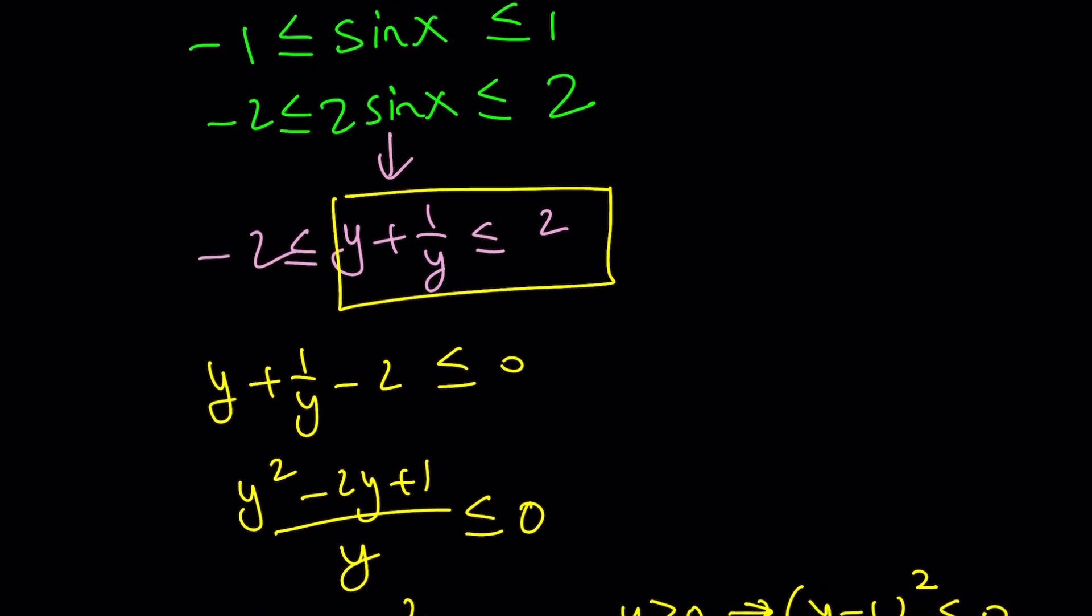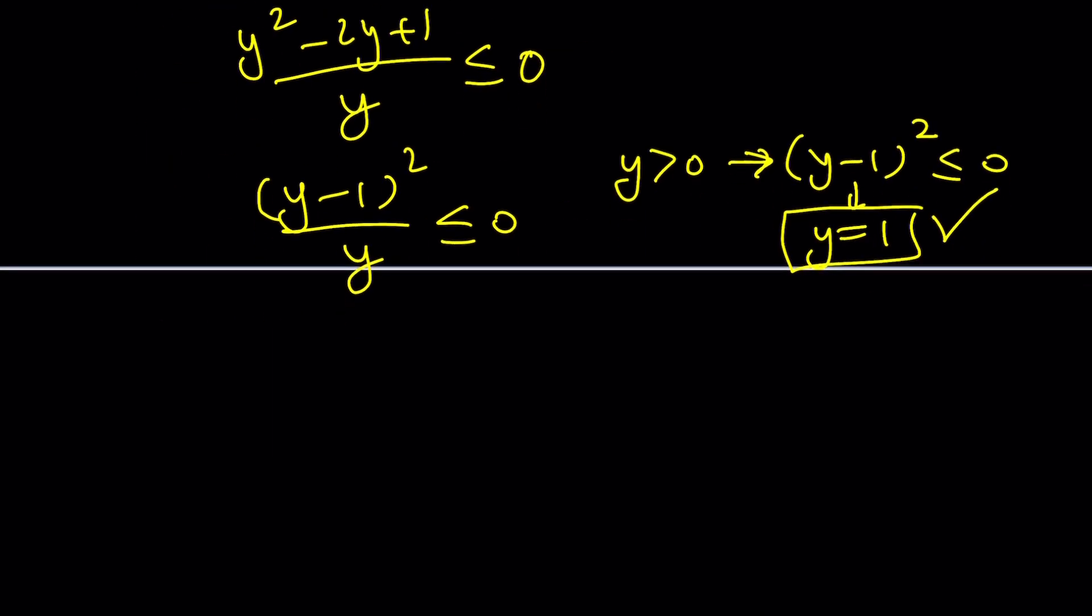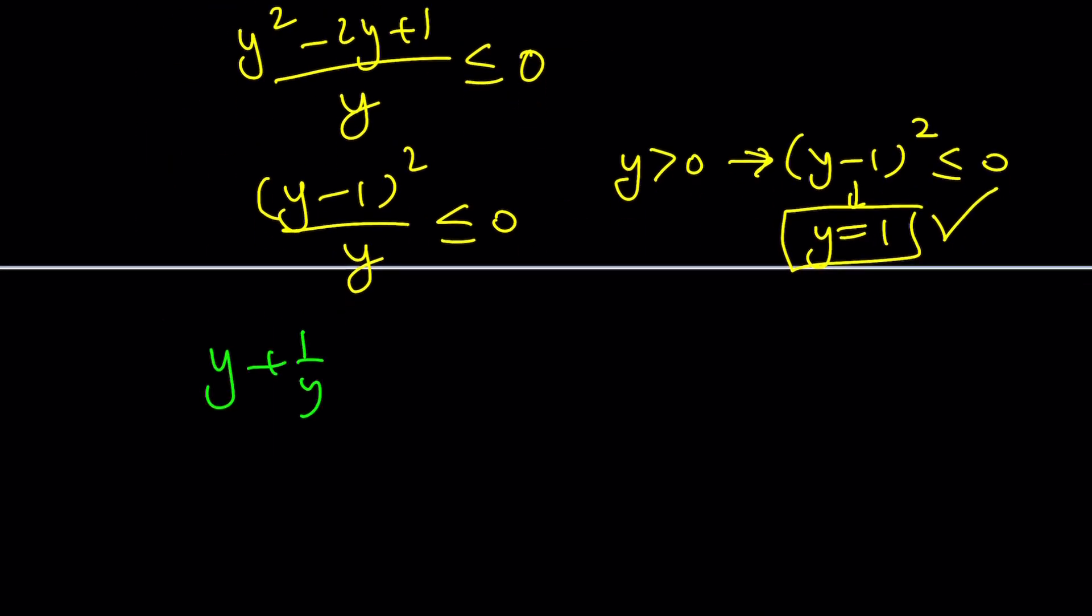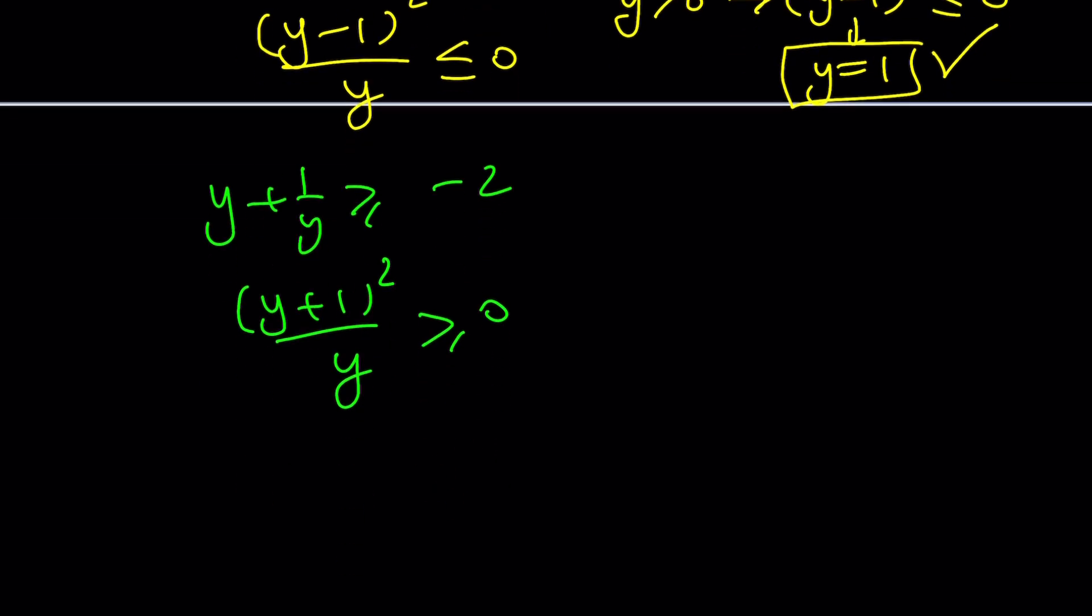Now, look at the other piece of this inequality. I mean, this one. So, Y plus one over Y is greater than or equal to negative two. This is going to be very similar. Let me just tell you. This is going to give you the following. And now, think about it. If Y is positive, there's nothing interesting about it because it's not going to work. So, if Y is negative though, this gives us Y plus one squared, because you're going to multiply both sides by a negative number, and you're going to get the following inequality, which implies Y is equal to negative one.